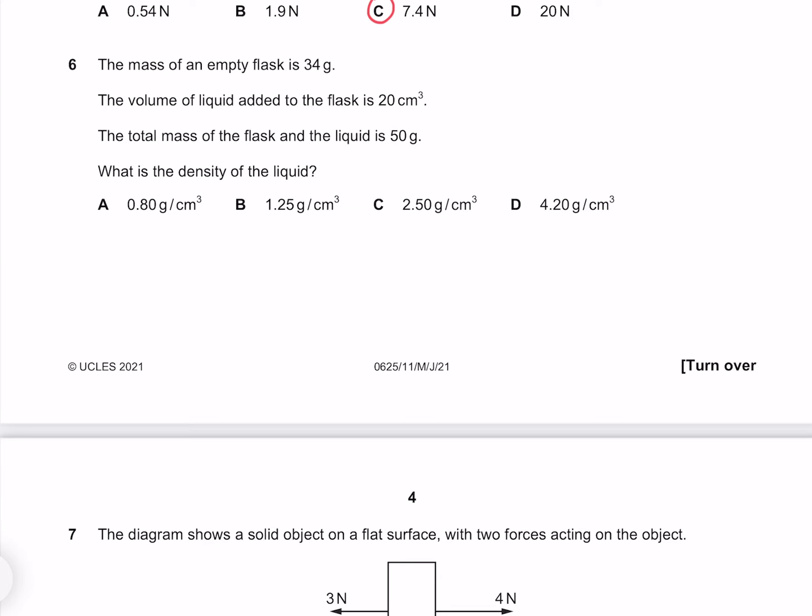The mass of an empty flask is 34 grams. The volume of the liquid added to the flask is 20 centimeter cubed. The total mass of the flask and the liquid is 50 grams. What is the density of the liquid? Our density is our mass per volume. Because we're looking for the density of the liquid, we need to use the mass of the liquid, which is going to be the total mass minus the mass of the empty flask, divided by our volume, which gives me 0.8 grams per centimeter cubed. So A must be our answer.